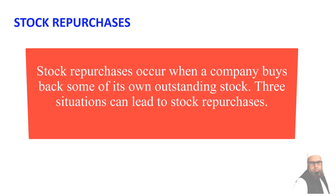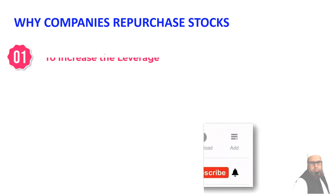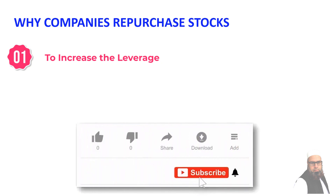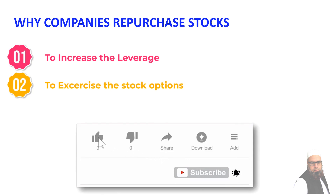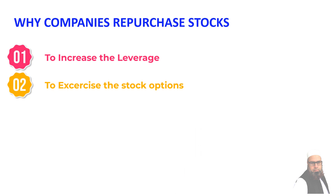Stock repurchase occurs when a company buys back some of its own outstanding shares. Several situations can lead to stock repurchases. A company may decide to increase its leverage by issuing debt and using the proceeds to repurchase stock. Many firms give their employees stock options, and companies often repurchase their own stock to sell back to employees when they exercise those options. In this case, the number of outstanding shares reverts to its pre-repurchase level after the options are exercised.